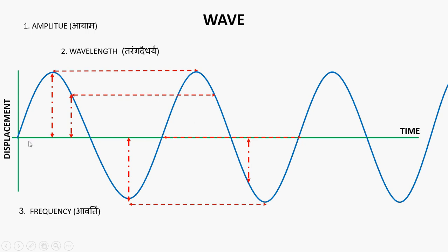The next definition is frequency. In one second, the number of complete waves that pass a given point is called frequency. In one second, how many complete wave cycles occur — that is frequency.